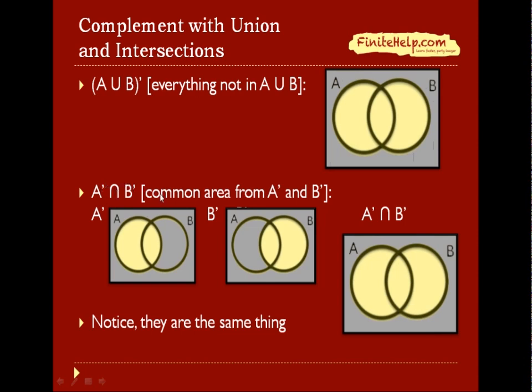A prime intersect B prime would represent the common area from A prime and B prime. So first, let's break it down to A prime and B prime themselves. Here you can see again, this is A prime and this is B prime. So we want the intersection of these two, which is the common area between these two.